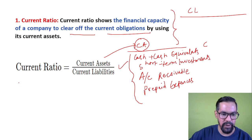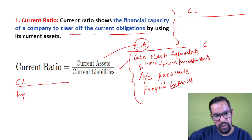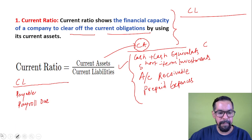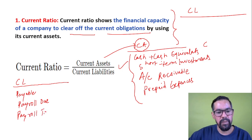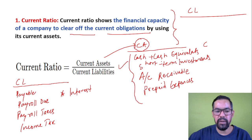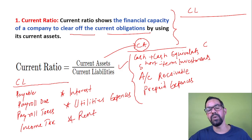Current liabilities include payables, payroll dues (which includes salaries and other things), payroll taxes, income taxes, interest payable, utility expenses, rent, and others. Whenever you talk about the current ratio, it measures a company's financial capacity to pay off current obligations — monthly expenses like payroll, payables, salaries, taxes, interest, rent, and utility expenses.